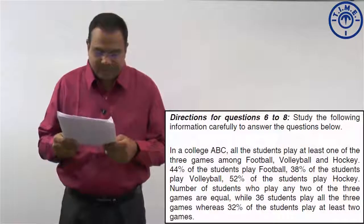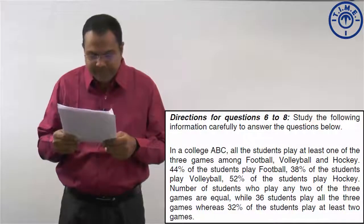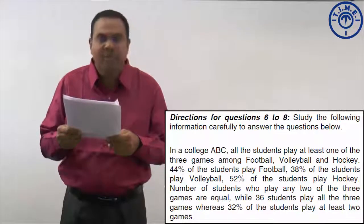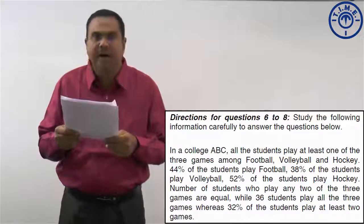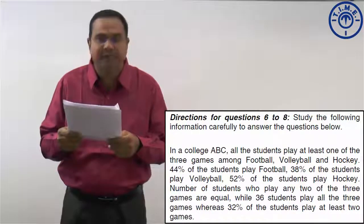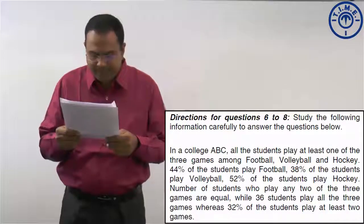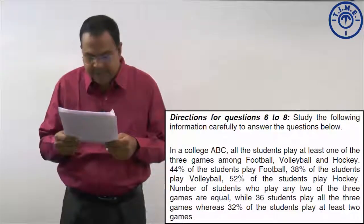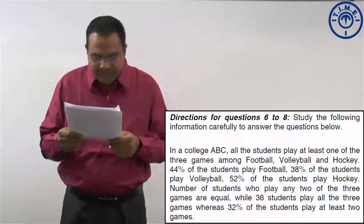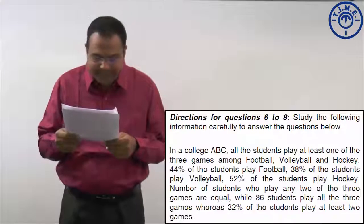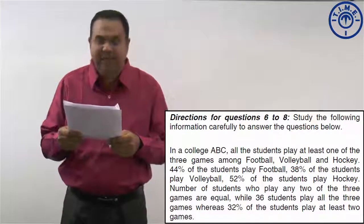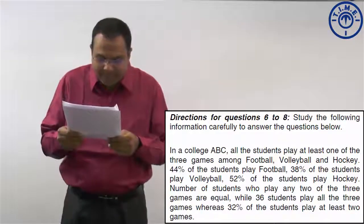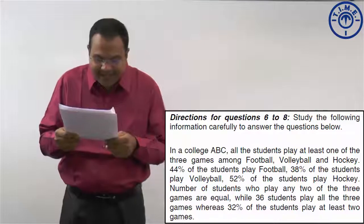Next set. In a college ABC, all the students play at least one of the three games among football, volleyball and hockey. 44 percent of the students play football, 38 percent play volleyball, 52 percent play hockey. The number of students who play any two of the three games are equal, while 36 students play all three games, and 32 percent of the students play at least two games.